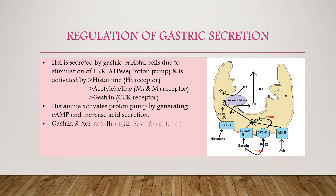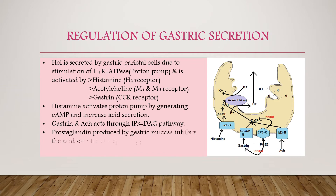Histamine, gastrin, and acetylcholine activate the proton pump to release hydrochloric acid. Histamine binds to the histamine receptor site and generates cAMP, which releases calcium ions. This in turn stimulates the H+/K+ ATPase, or proton pump, to produce hydrochloric acid.